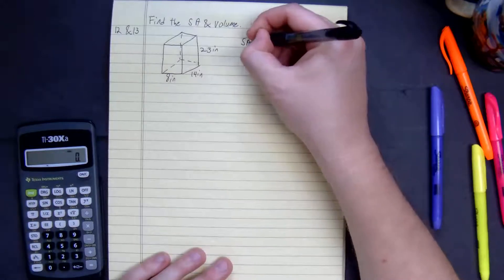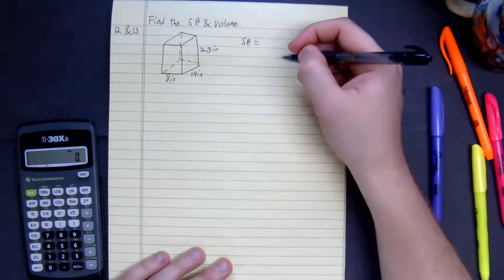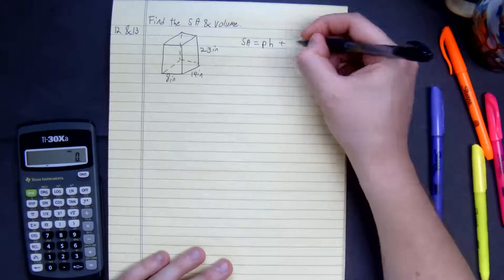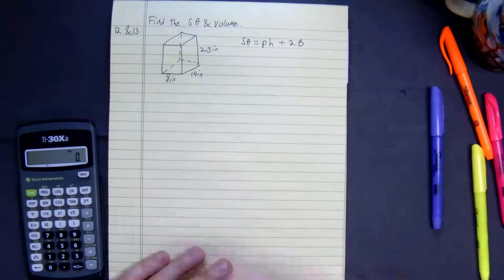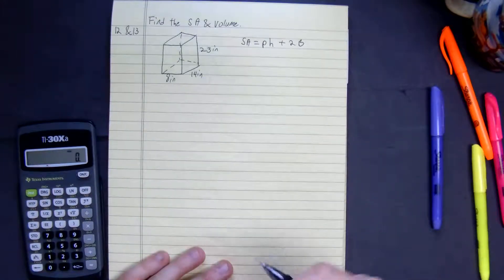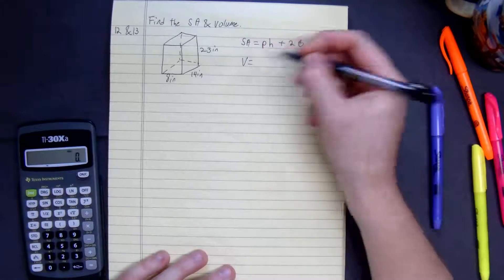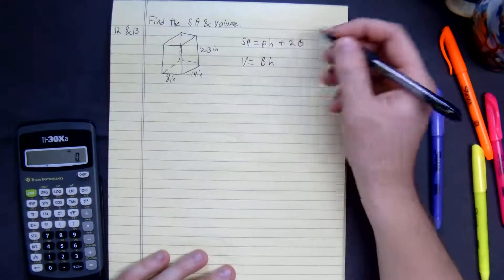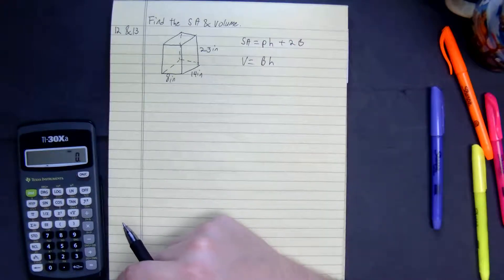Surface area of a rectangular prism is equal to the perimeter times the height plus 2 times the base. And then volume is equal to base times height. So we're going to use those formulas.